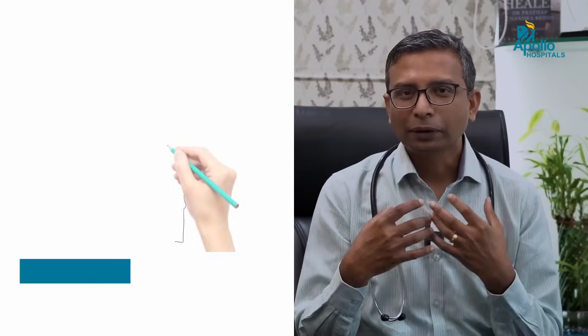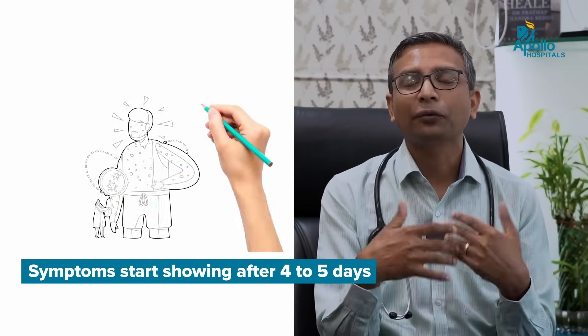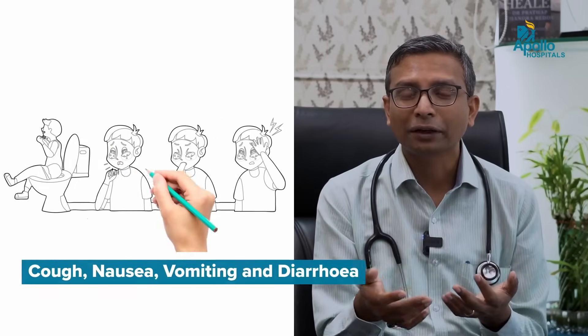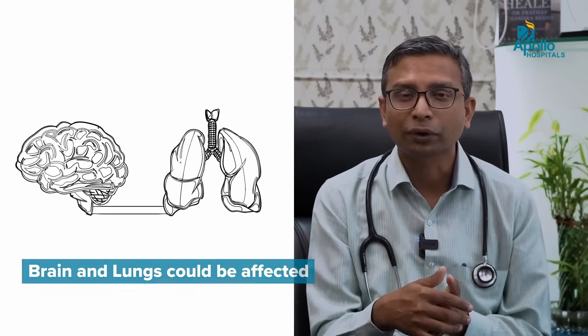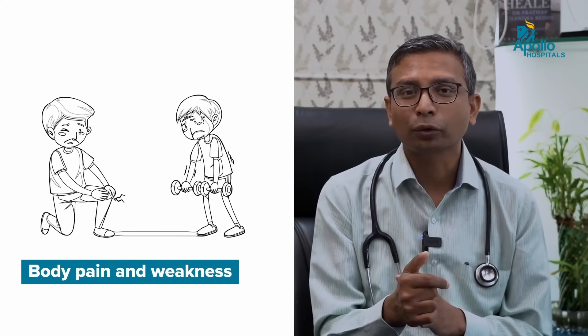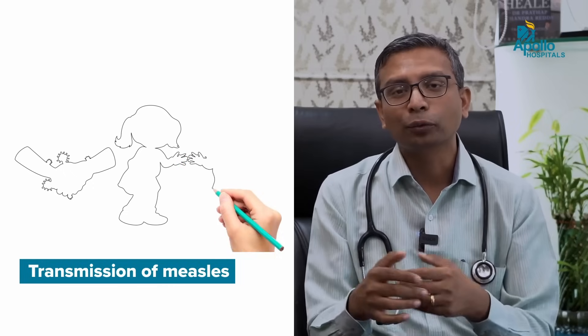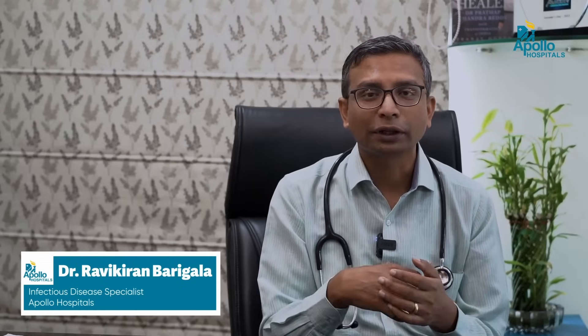Once you get measles there is an incubation or prodromal stage where you have the infection but no symptoms — this can last a few days, and after about five days you might start having symptoms. Symptoms include fever, rash, cough, nausea, vomiting, diarrhea, and drowsiness. If it affects other parts of the body — lungs, brain — those complications can occur. Importantly, you are most infectious even before you have all these symptoms, which is why measles is often missed. By the time symptoms appear, you may have already transmitted the virus to several others — one family member can pass it to many, or children can transmit it at school or daycare.